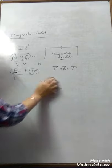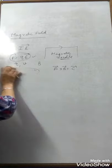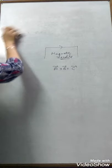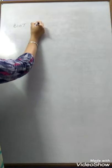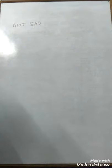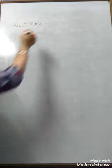Now the next topic is Biot-Savart's law. This is the basic law in electricity and magnetism which is used to find the magnetic field of a current-carrying conductor. That is Biot-Savart's law.